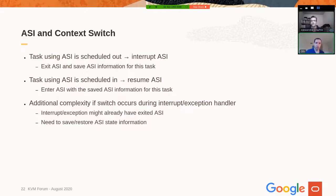When a task using ASI is scheduled out, the behavior is fairly simple: we interrupt the ASI, it exits the ASI, saves the ASI information for the task. Once the task is rescheduled, we resume the ASI — entering it again with the information that was set for this task. There is some complexity if this occurs during an interrupt or exception handler because the ASI may have already been exited or interrupted, which needs to be accounted for in the implementation.